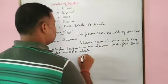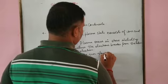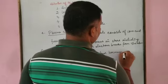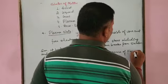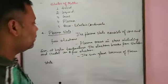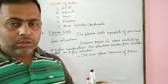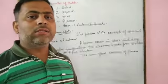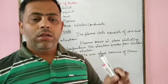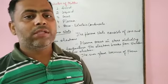The sun glows because of plasma state. We can also get plasma state on Earth. When a gas is heated at higher temperature and low pressure, the gaseous atoms break into ions and electrons, and we get plasma state.